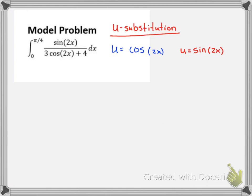I've got u equals cosine of 2x, or I could have u equals sine of 2x. I'm not sure which one is the inner function, but if I was going to use that, the u equals cosine of 2x, I'd better say u equals 3 cosine of 2x plus 4.